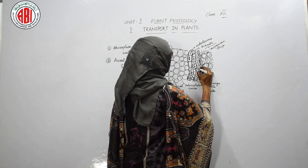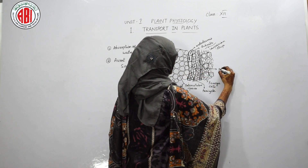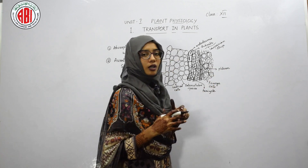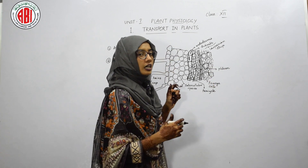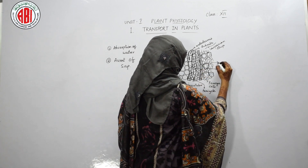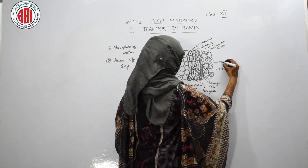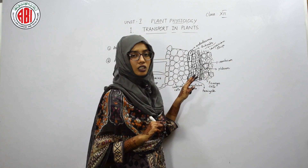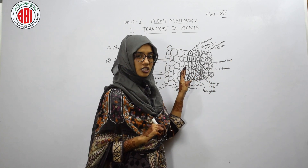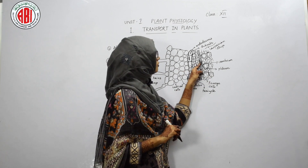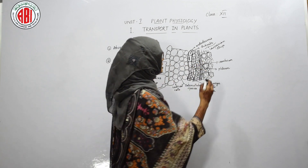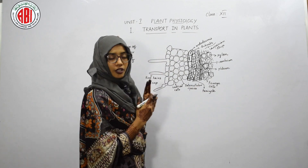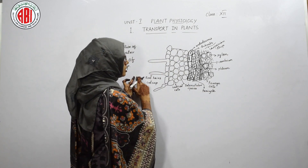Inner to the pericycle, sieve tube cells are present, which is called phloem. Inner to the phloem, in the case of a dicot, a network of cells called cambium is present. Cambium is a layer between the two conductive tissues — phloem and xylem. After the cambium, the cells present are called xylem. The water which moves from the soil must reach the xylem vessels.